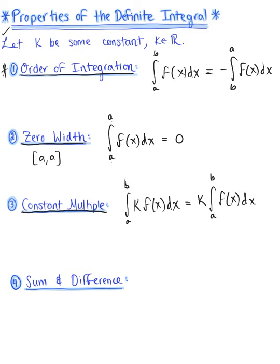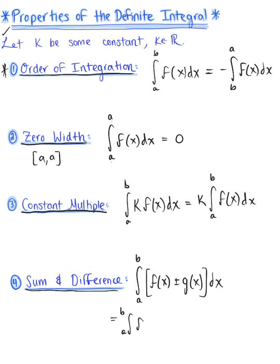Next we have the sum and difference property. If you have the definite integral from a to b of f of x plus or minus another continuous function g of x dx, we can rewrite this as the sum or difference of two definite integrals: the integral from a to b of f of x dx, plus or minus the integral from a to b of g of x dx.